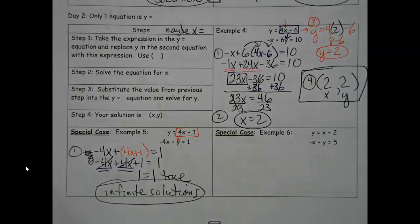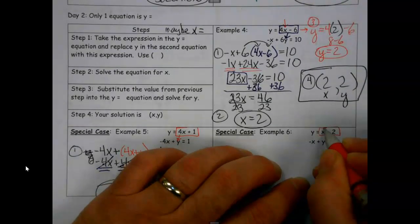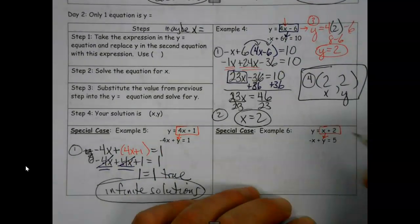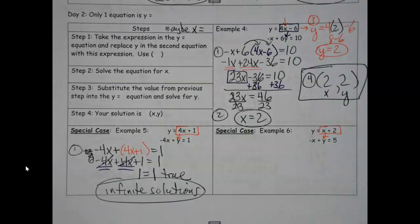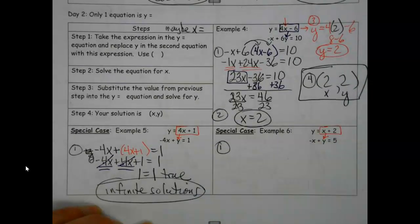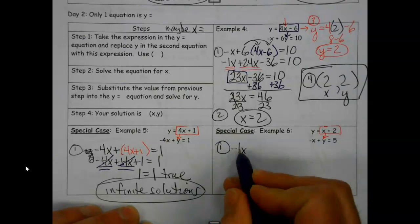And so most of you probably know what's coming on the next one now. You're like, we had infinite, we had one answer. Oh, this is going to be no solution somehow. It is. So I find that y equals, I box that in, and I'm going to put that in where the y goes.